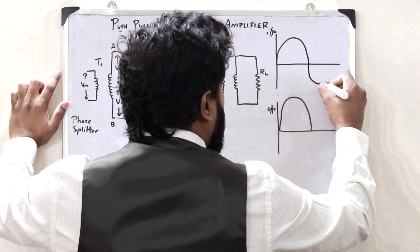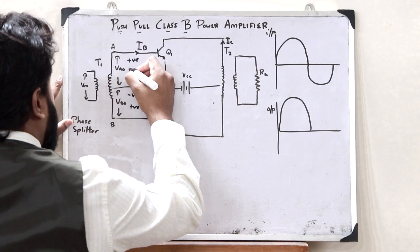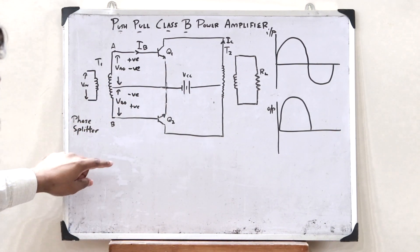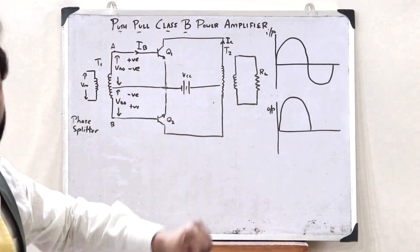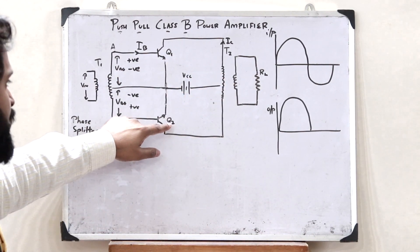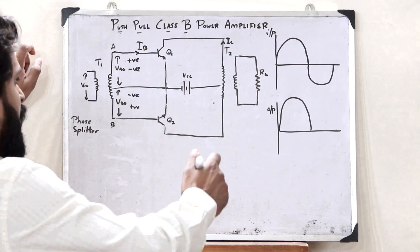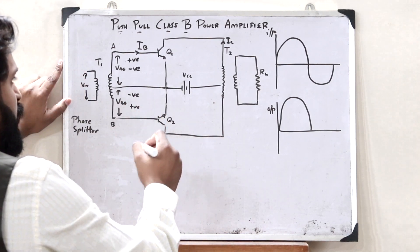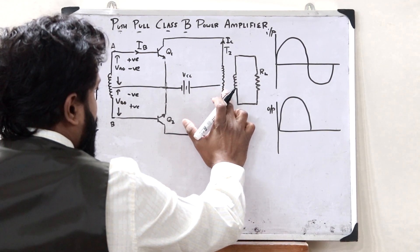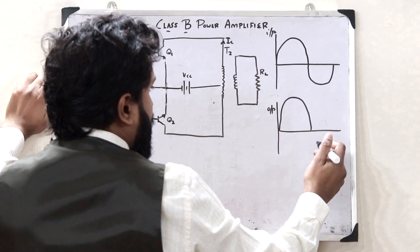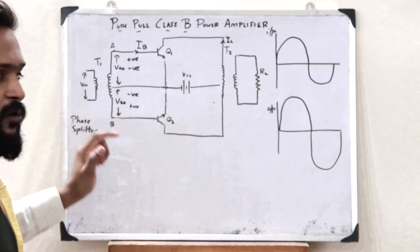During the negative half cycle of the input signal, VBO is positive whereas VAO is negative. In that case, Q2 is forward biased whereas Q1 is reverse biased. Q2 is therefore in the on condition and Q1 is in the off condition. A current flows through Q2, and through transformer coupling to the load resistor, we get an amplified output across the load resistor.